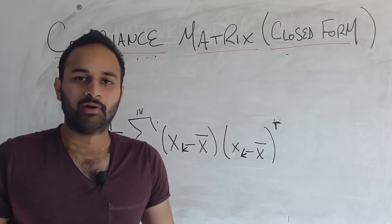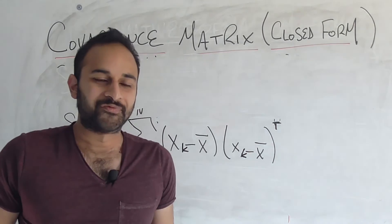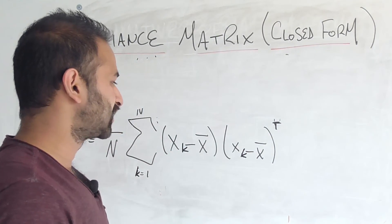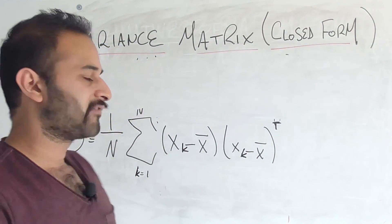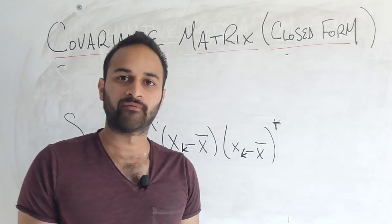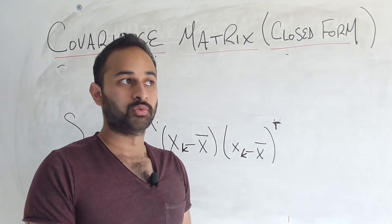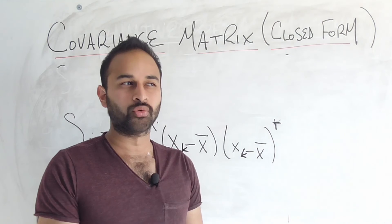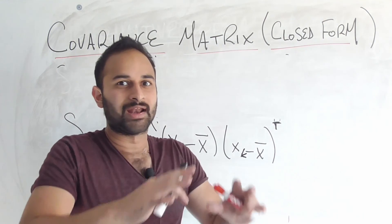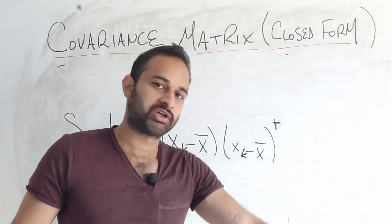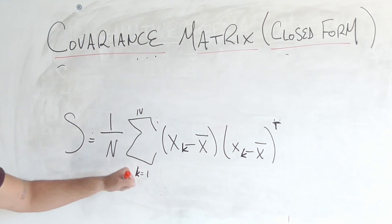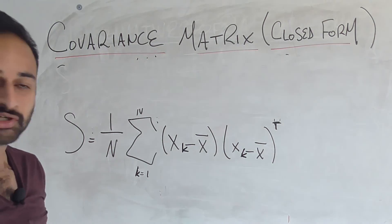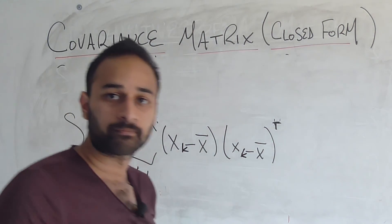A lot of you are thinking: awesome, why did we just do that? The reason is it's going to be really nice to have a closed form of the covariance matrix going forward, so we can take derivatives of it and such without having to write out the entire matrix. So there you have it — a closed form of the covariance matrix, proven. Until next time.